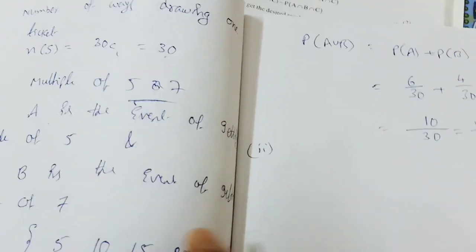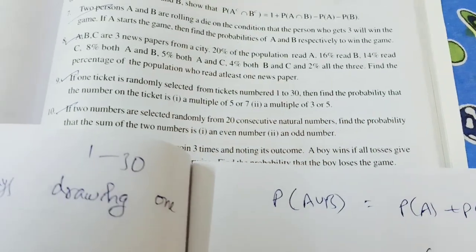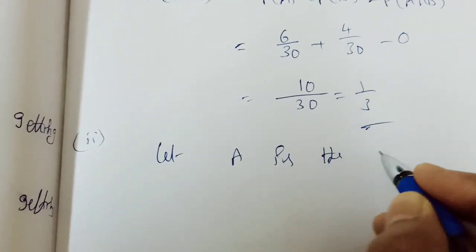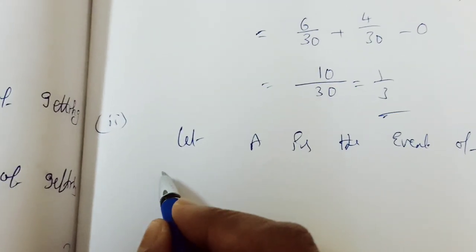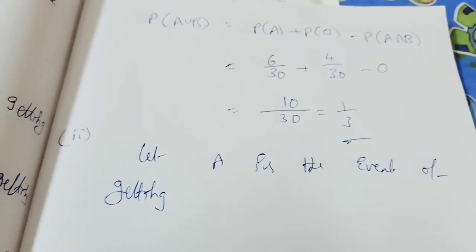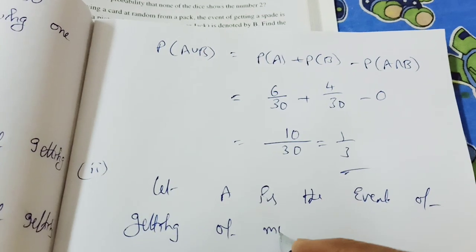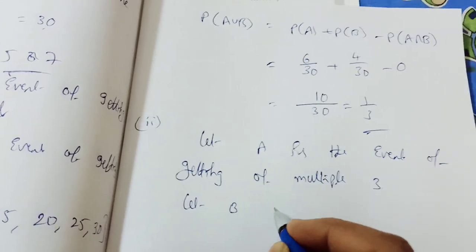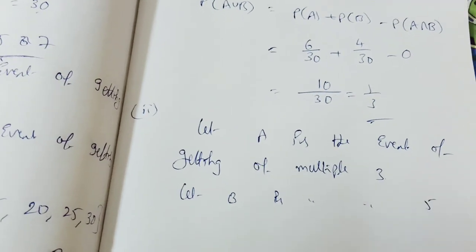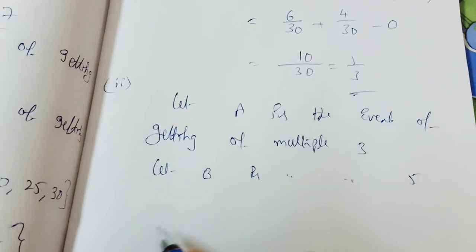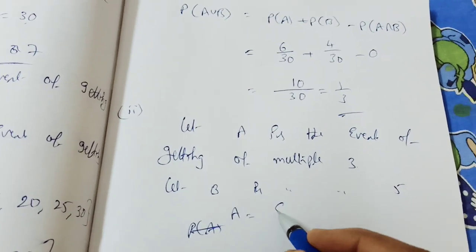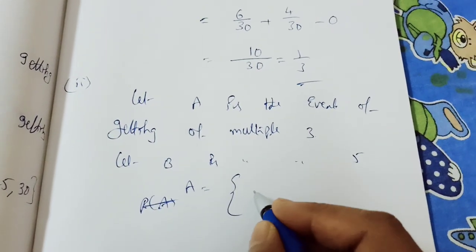Second option: multiple of 3 or 5. Let A be the event of getting a multiple of 3, and B be the event of getting a multiple of 5. For multiples of 3: using the 3 times table up to 30, we get 10 elements.